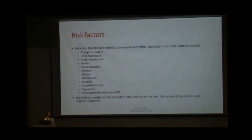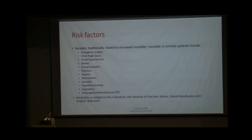Traditionally, several risk factors increase morbidity and mortality in cirrhotic patients undergoing surgery: emergency surgery, Child's C status, high bilirubin, low albumin, ascites, encephalopathy, prolonged prothrombin times, hypoxemia, malnutrition, anemia, and pre-existing infection. Morbidity is related to the underlying liver dysfunction, the surgery performed, the indication for surgery, and the amount of blood loss and transfusions required postoperatively.